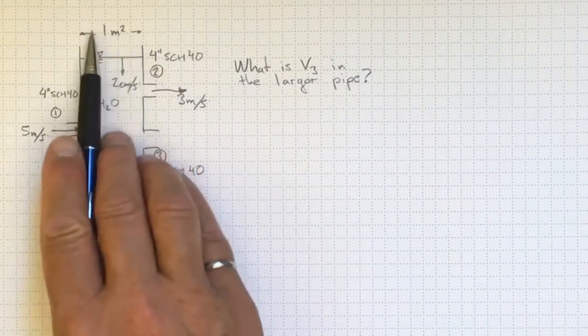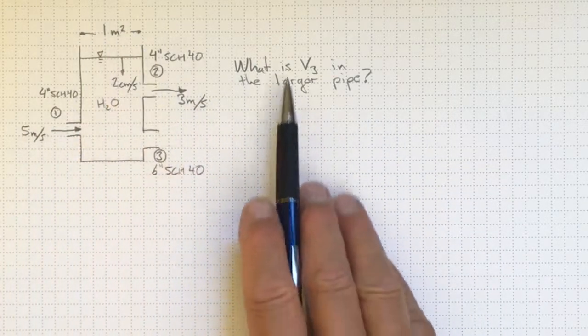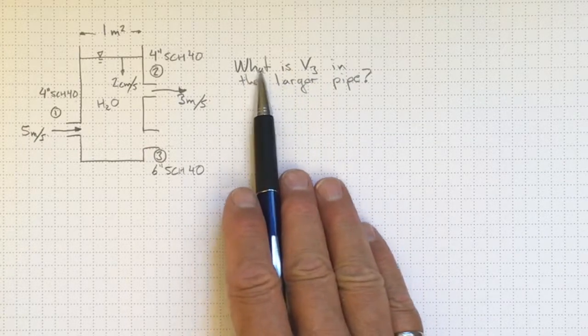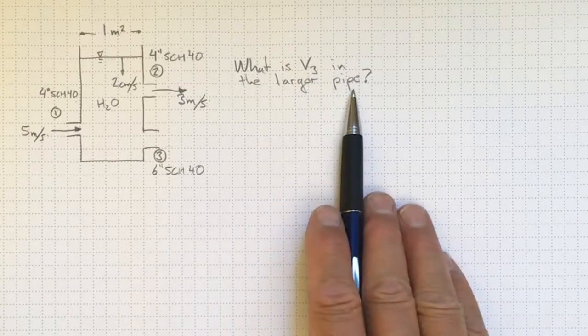The cross-sectional area of the tank is 1 square meter and the question we want to find out is what is V3 in this larger pipe?